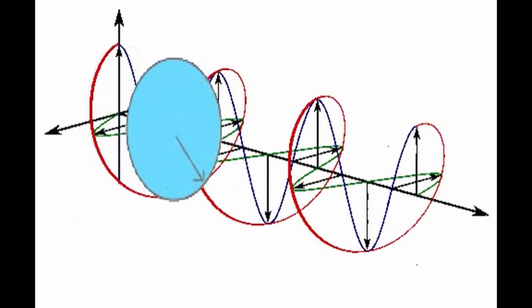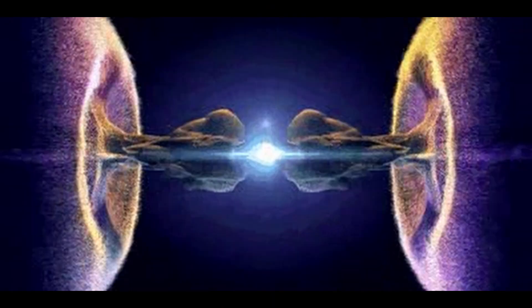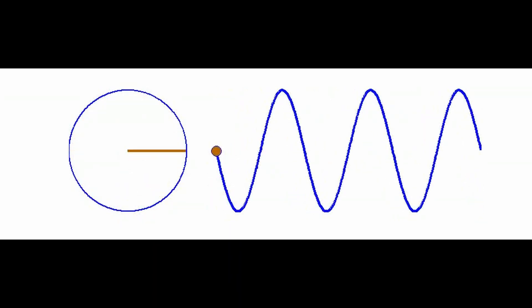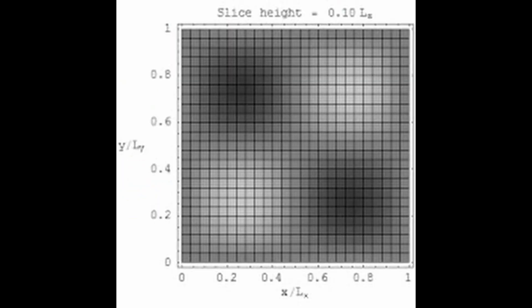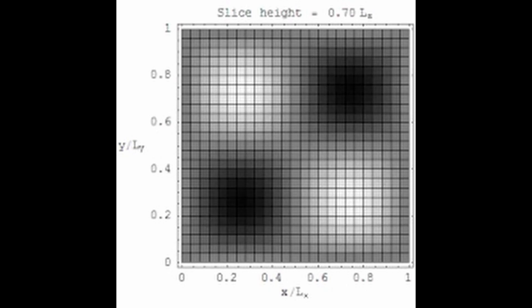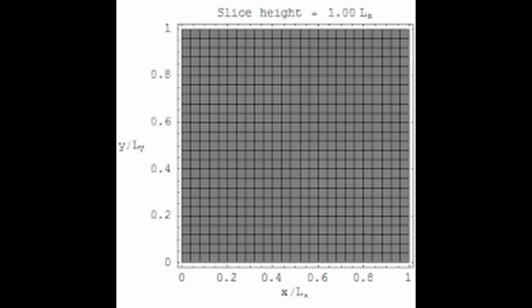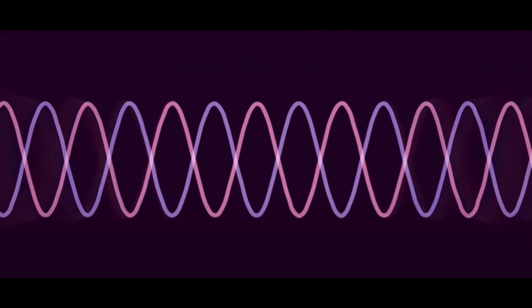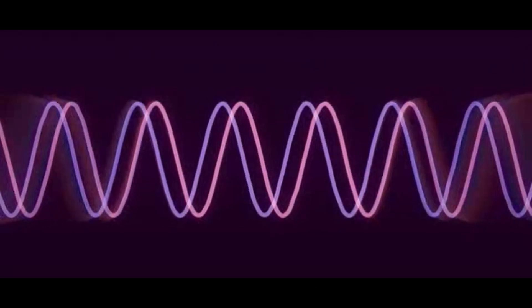One of the main features of quantum mechanics is that quantum states can exist in superpositions of other states. This means that a quantum state can be written as a linear combination of other states in the Hilbert space, with complex coefficients that determine the probabilities of each state. For example, an electron can be in a superposition of spin-up and spin-down along some direction, which means that it has some probability to be measured as spin-up and some probability to be measured as spin-down. Another feature of quantum mechanics is that quantum states can change over time according to the Schrödinger equation, which is a differential equation that describes how the state vector evolves in the Hilbert space.